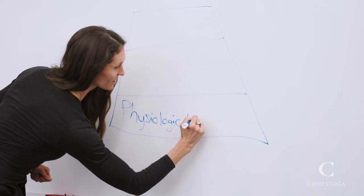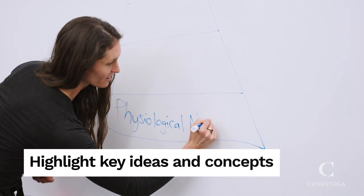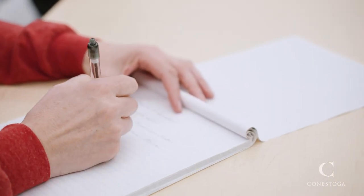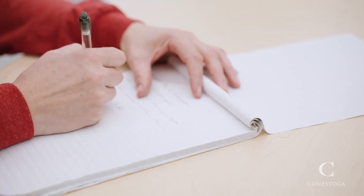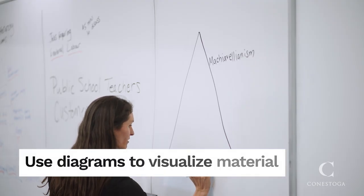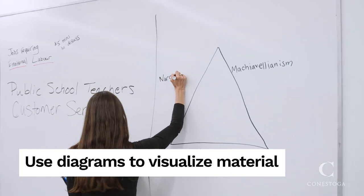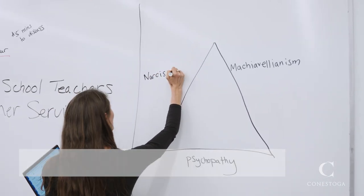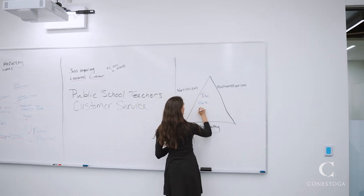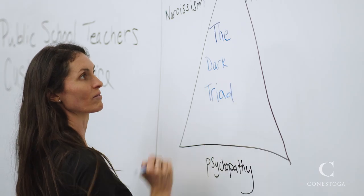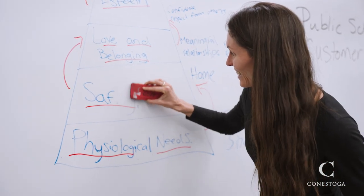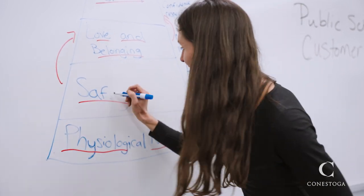Effective whiteboard use includes highlighting key ideas, terms, or concepts that are particularly important to the learning, and that students may want to refer back to throughout the lesson. The whiteboard is also a great tool for laying out diagrams that allow students to better visualize what you're teaching. When using diagrams, be sure to explain as you draw, and include clear symbols to help enhance knowledge retention. If you make a spelling mistake, not to worry — it happens to everyone. Simply erase and correct.